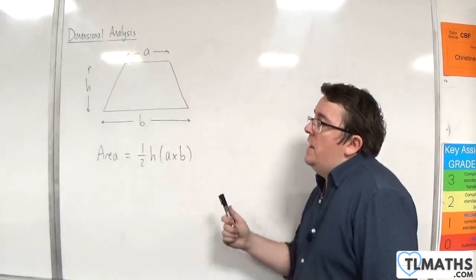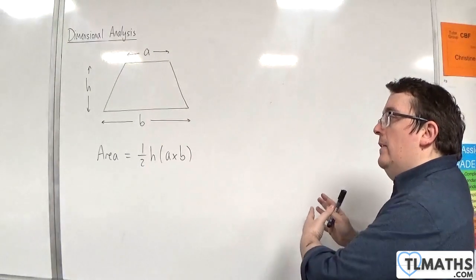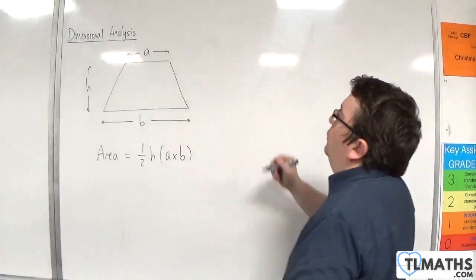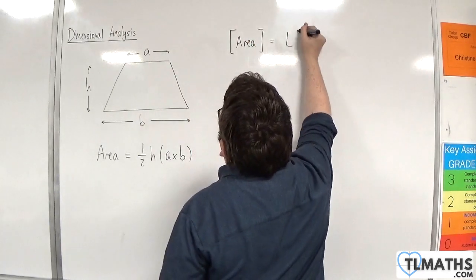So let's now look at this by looking at the dimensions of area, and then the dimensions of the right-hand side. So the dimensions of area would be L squared.